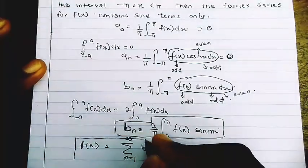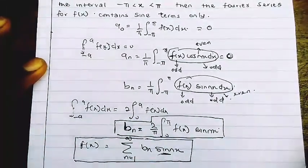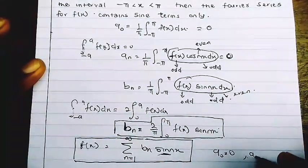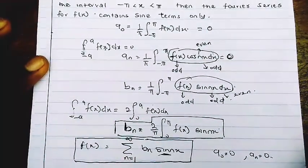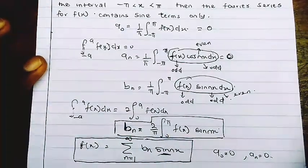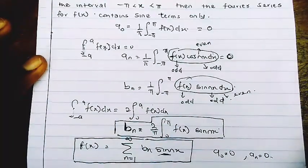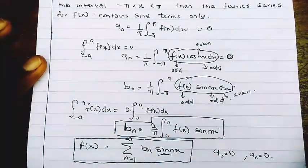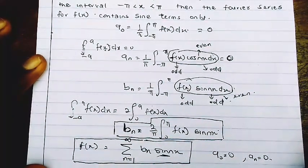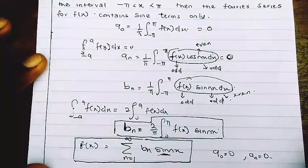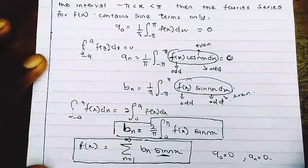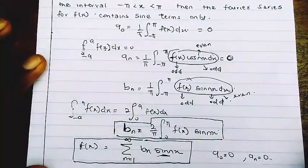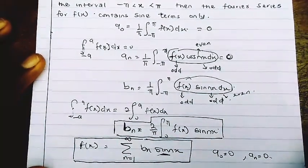Since a₀ = 0 and aₙ = 0 for odd functions, the series contains only sine terms. If you can remember these two conditions for odd and even functions, you are good to go in solving Fourier series questions. In our next video, we'll take examples on how to identify odd and even functions and calculate their Fourier series. Thank you for watching — please hit the like and subscribe buttons if you enjoyed the video.